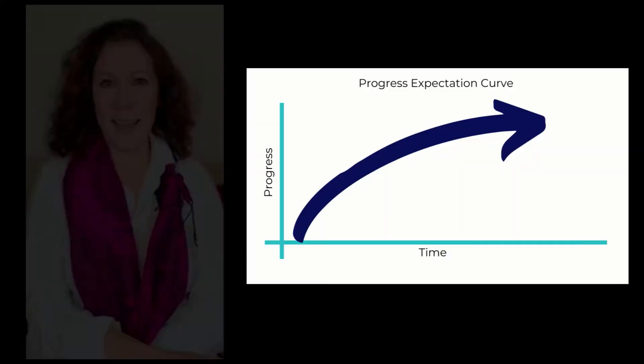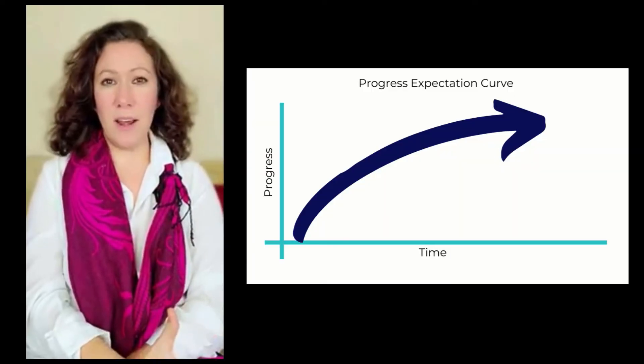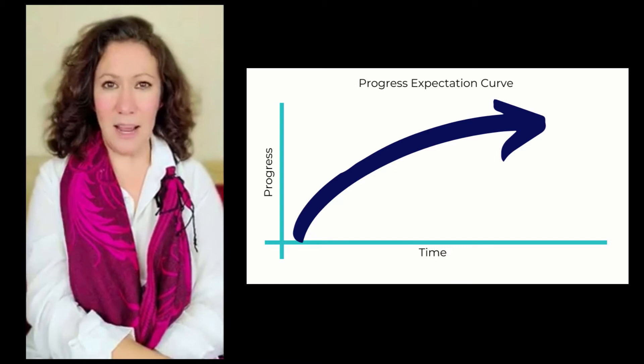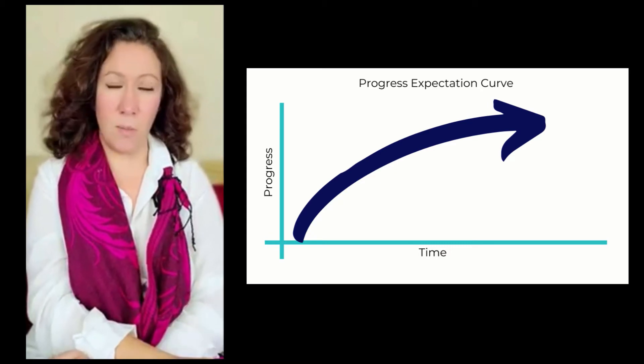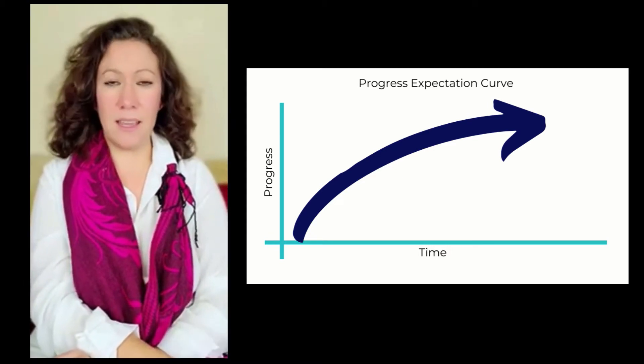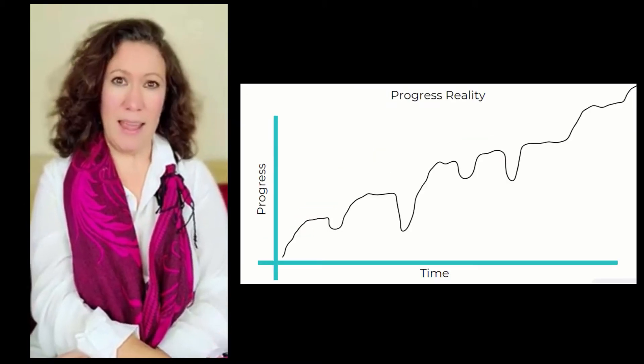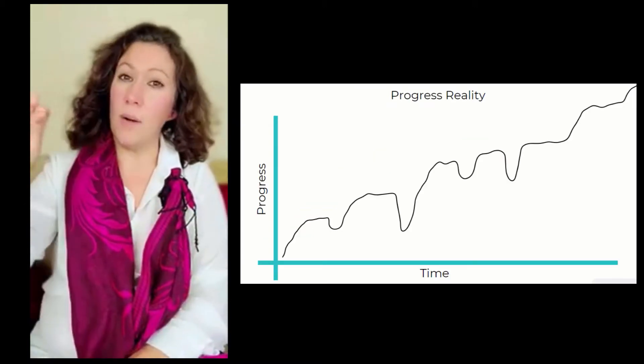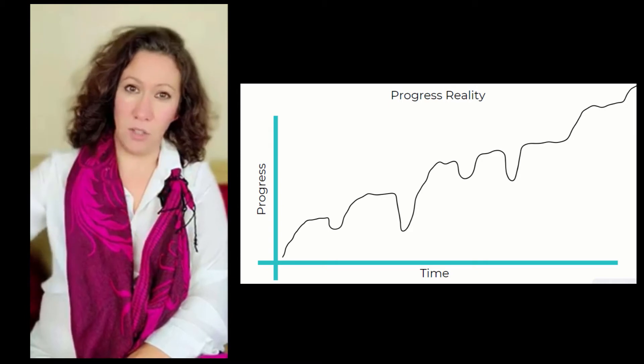The progress curve - we all want progress to go from here beautifully up to there, because that's what we see in all the diagrams. It's implanted in our head as a visual of what progress is. However, in reality, it's much more squiggly, but it is still going up on some level.